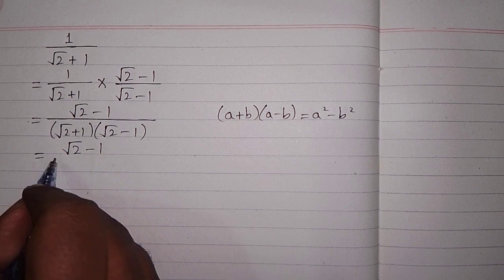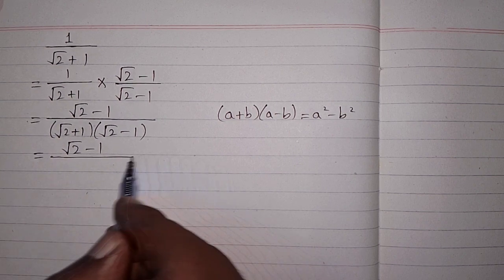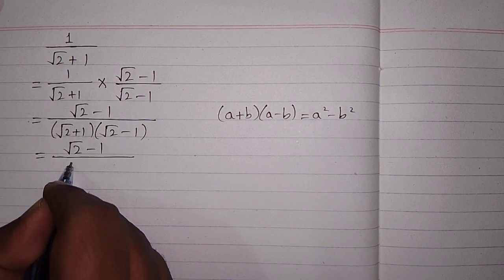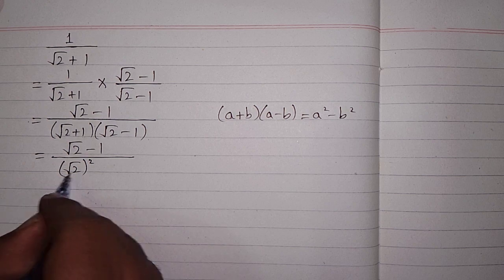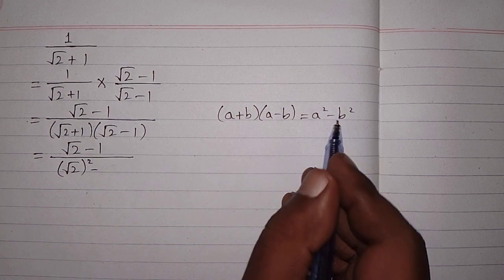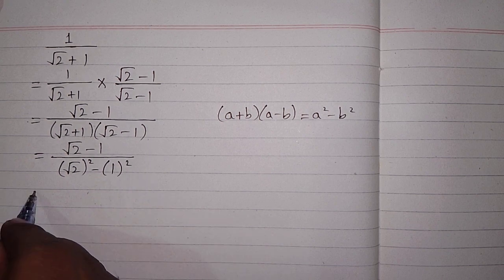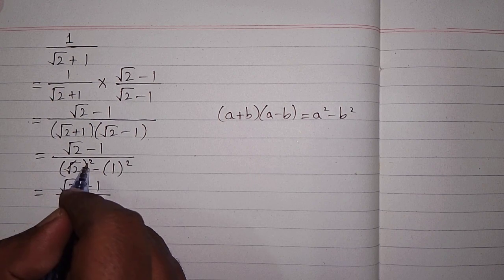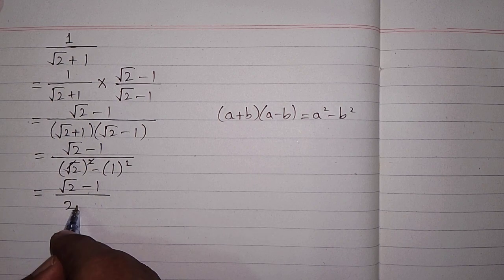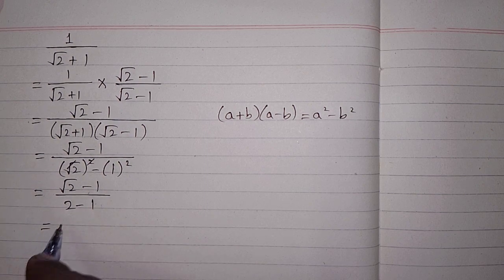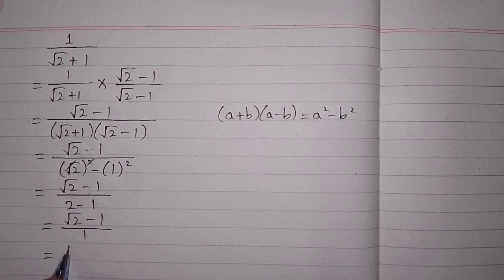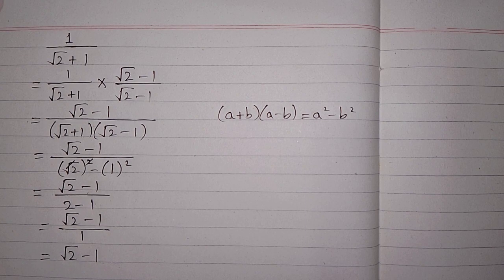So we write the numerator square root of 2 minus 1, and in the denominator we apply this formula. We have a squared which means square of square root of 2, then minus, then square of b which is square of 1. The square root and square cancel, giving us 2 minus 1, which equals 1. So square root of 2 minus 1 upon 1 gives us the required answer: square root of 2 minus 1.